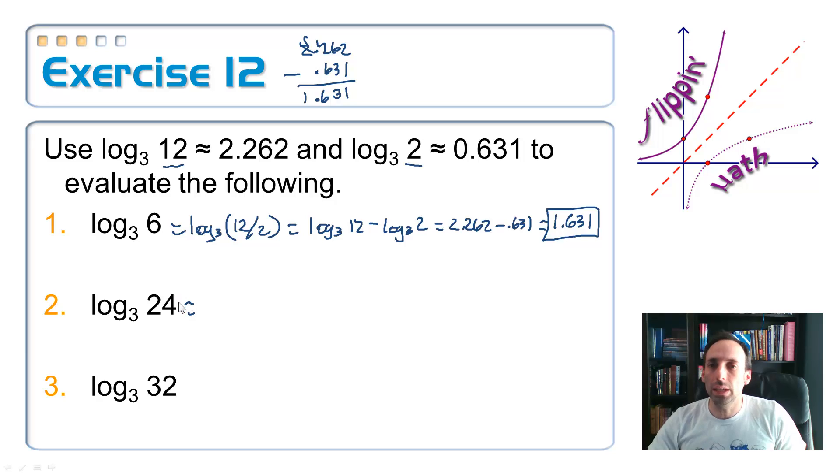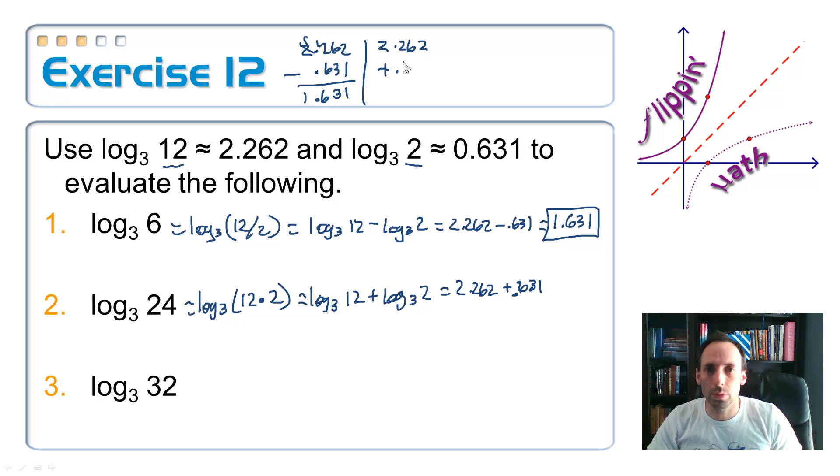Okay. How about number 2? Is there again anything that we can do with 12 and 2 to get 24 as the answer? How about I'm multiplying this time? How about this is the log base 3 of 12 times 2. How does the multiplication, the log of a product simplify? It simplifies as addition. The log base 3 of 12 plus the log base 3 of 2. So now this time I'm just adding the two numbers that they give us. 2.262 plus .631.